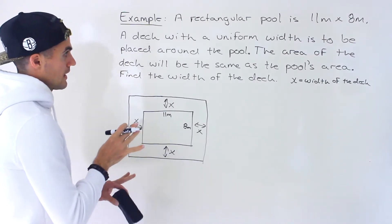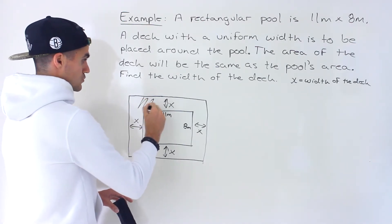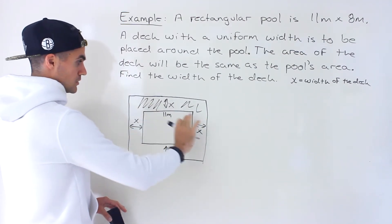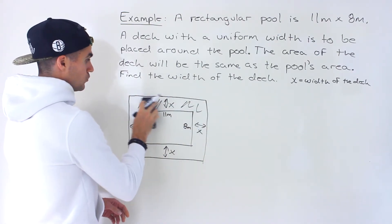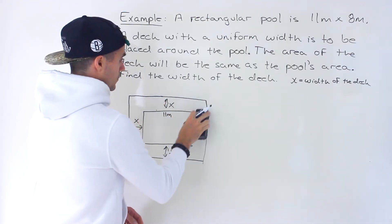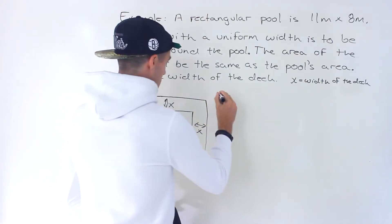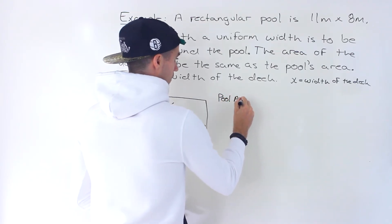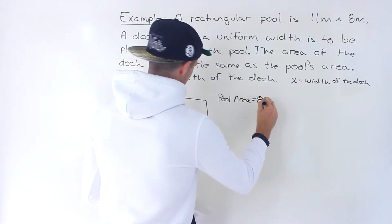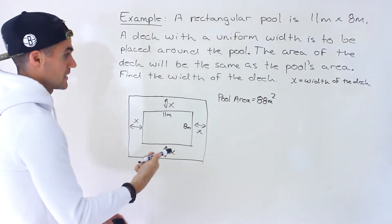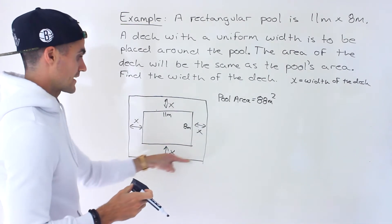We have our diagram. We're told that the area of the deck — the strip all the way around, not including the pool — is going to equal the pool's area. So first, what is the pool area? The pool area is just 88 square meters: 11 times 8.